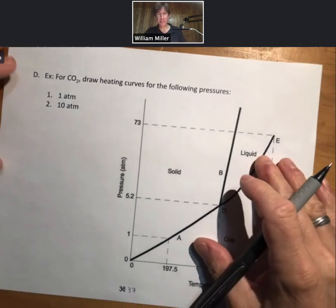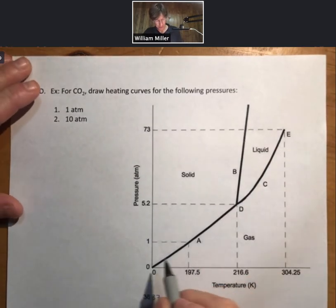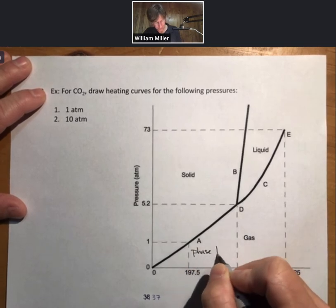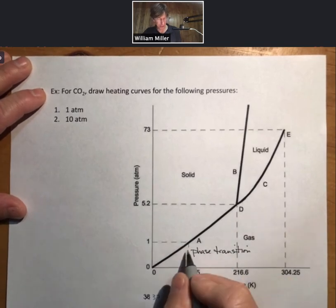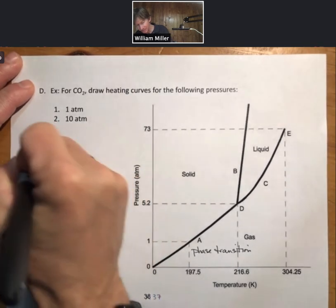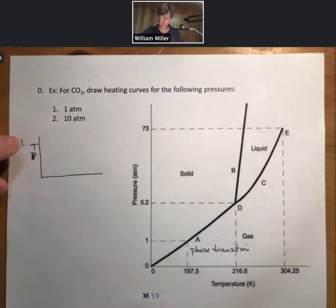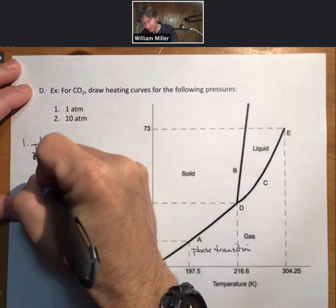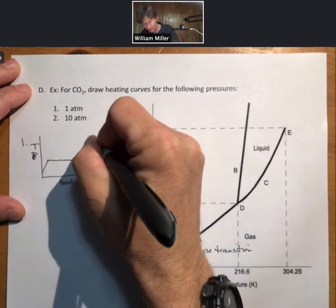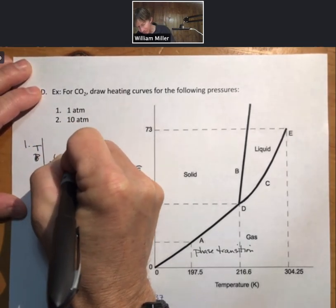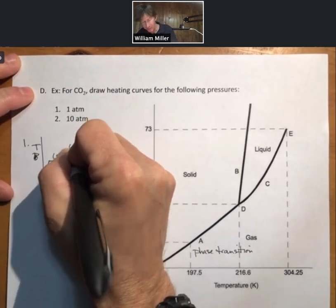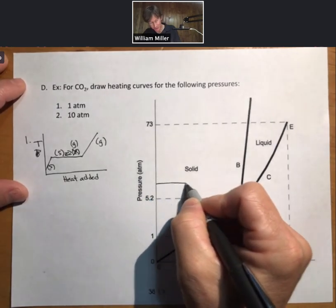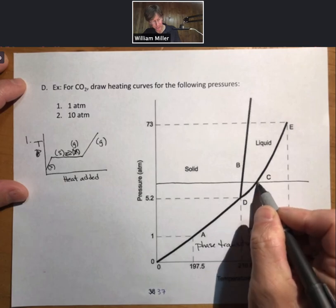Another question we can ask: for CO2 here, draw heating curves for the following pressures. What you do is you basically start at zero kelvin, you work your way up, any lines you cross are phase transitions. We've already done this at one atmosphere, let's do it for one atmosphere again. For heating curves, temperature is on the y axis, heat added is on the x axis. We're going to have solid phase heating, then a phase transition, solid to gas, and then gas. If we repeat this process at 10 atm, let's just say somewhere around here, we will get a solid to liquid and a liquid to gas transition.